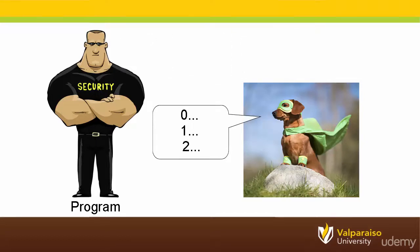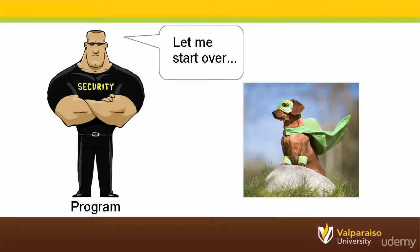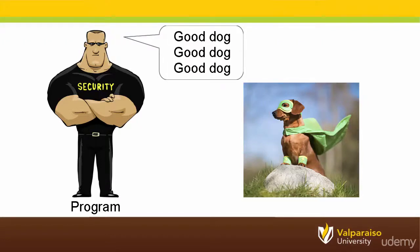If the program ever fails to pet the watchdog, something might have gone severely wrong and the watchdog timer will keep counting — for example, 904, 905, 906. Eventually the watchdog timer will count up to its threshold that you specify in your program, indicating the watchdog timer peripheral has waited too long for the program to pet it. In this case the watchdog peripheral will bark a reset command to the microcontroller, which will stop whatever your microcontroller is doing and attempt to restart your program all over again. Hopefully restarting the program will give your embedded system a better chance to figure out what went wrong.